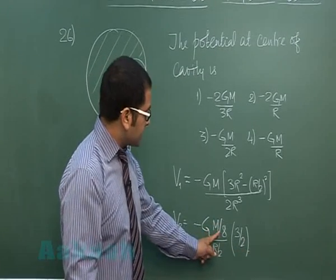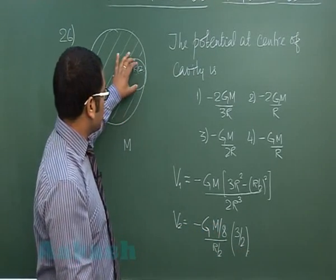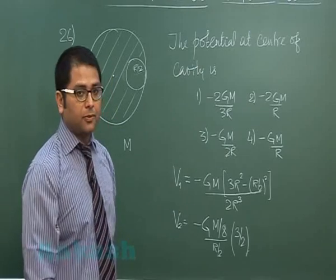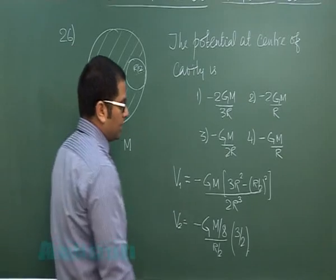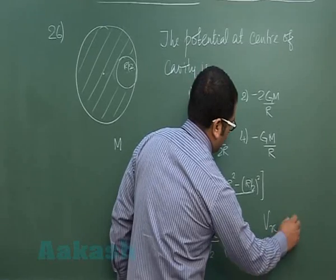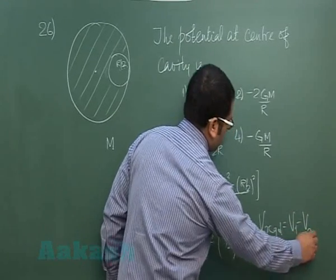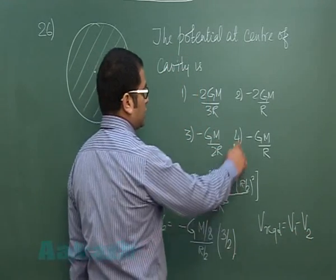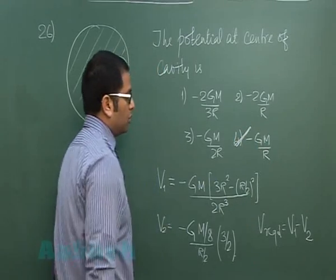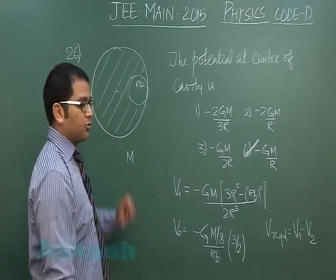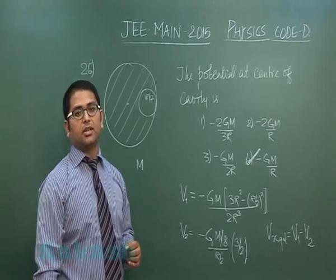So minus 3/2 G, mass is M/8 for this one, radius is r/2. And from this, the required potential would be V1 minus V2, and that will lead us to option number 4. So that was about question number 26. We'll move to question number 27.